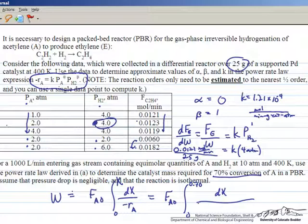We have K, which we now know, times the partial pressure of hydrogen. The remaining trick is relating that partial pressure of hydrogen to conversion so we can do this integration.